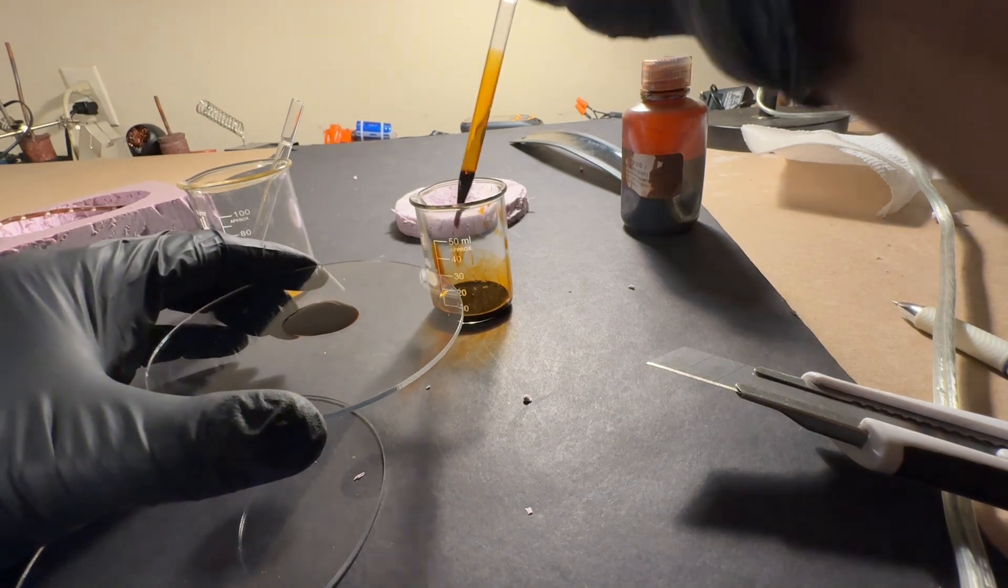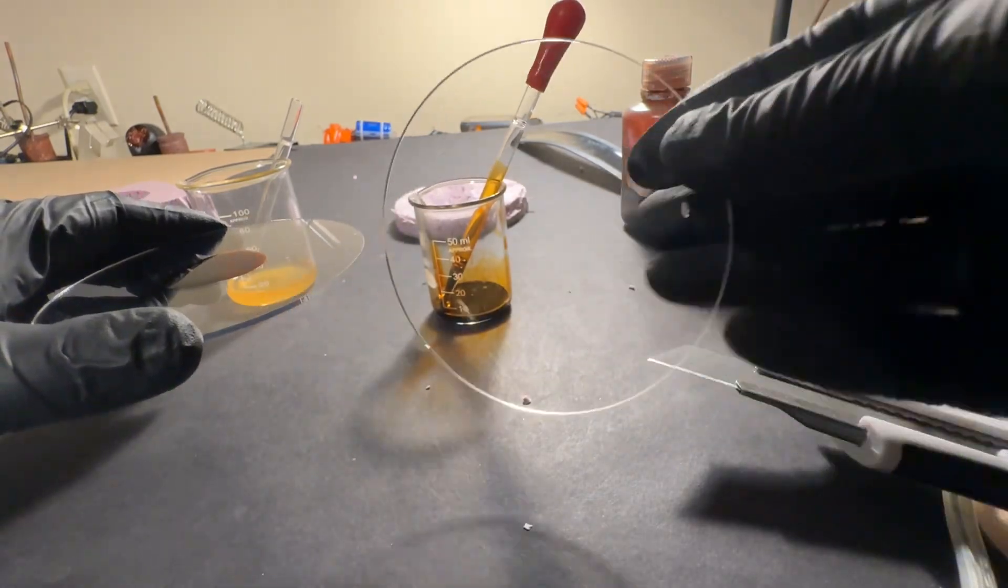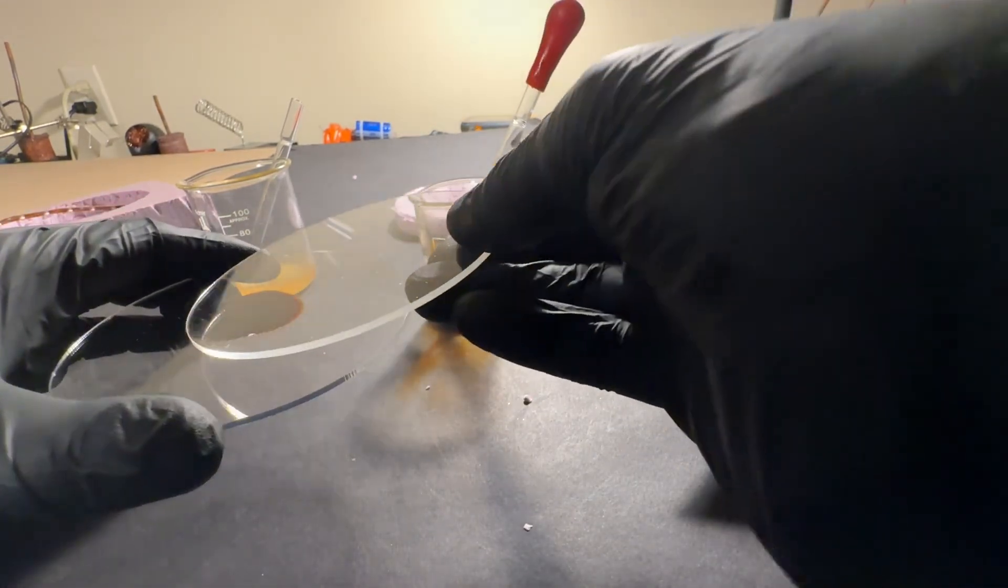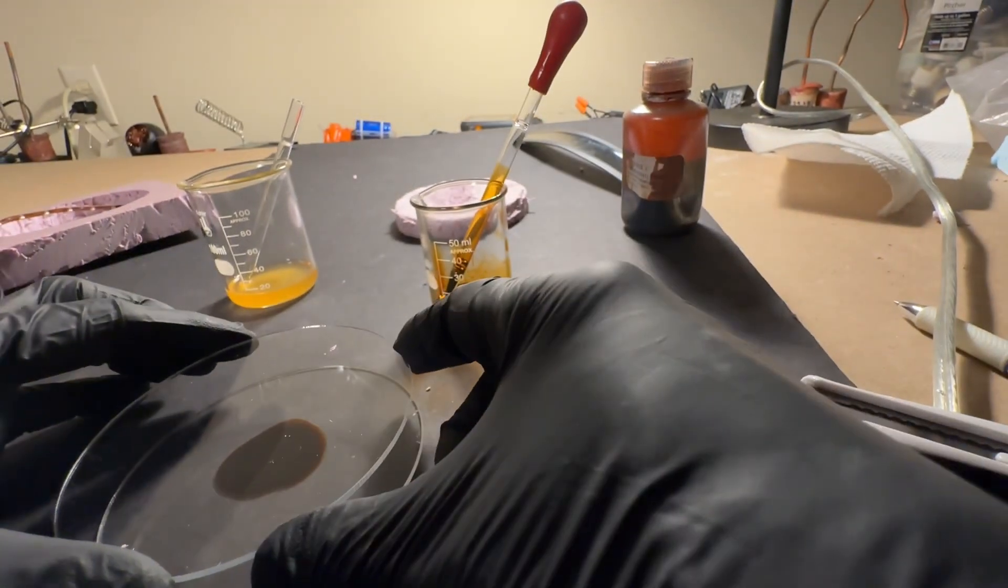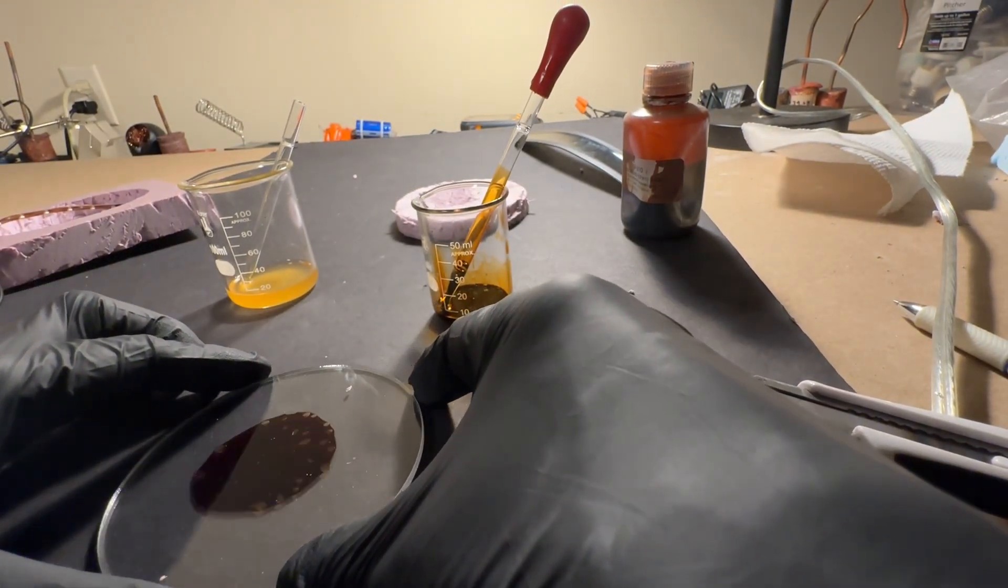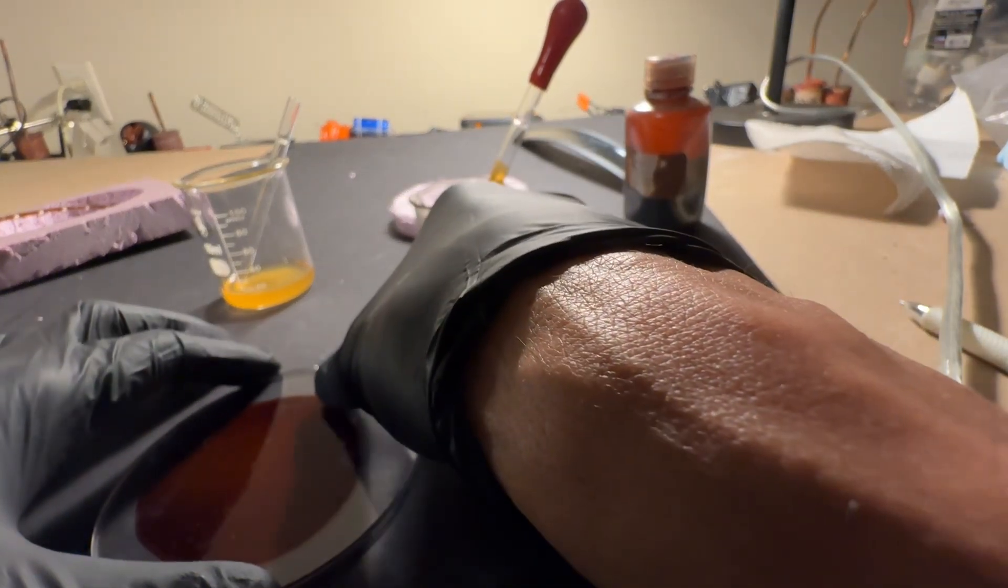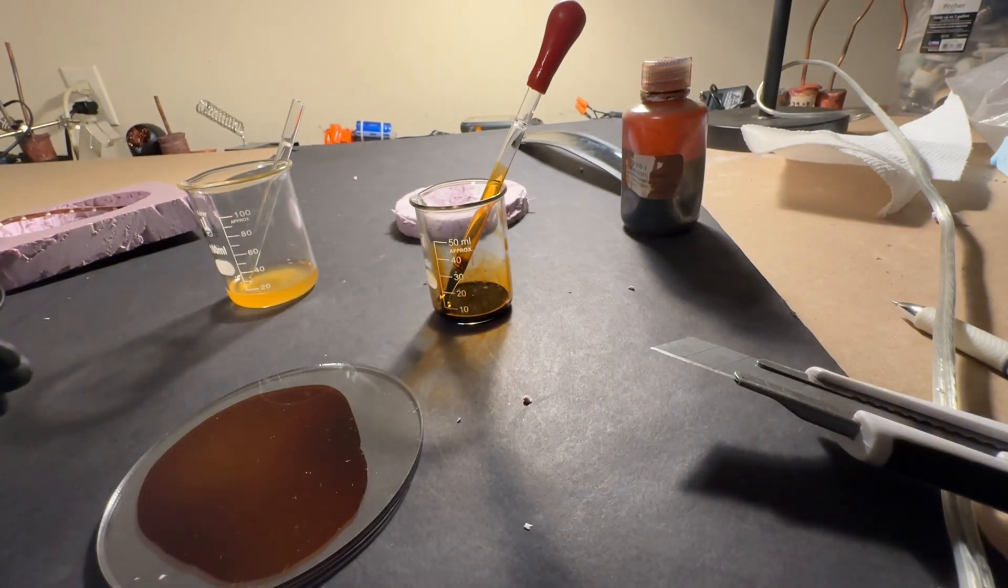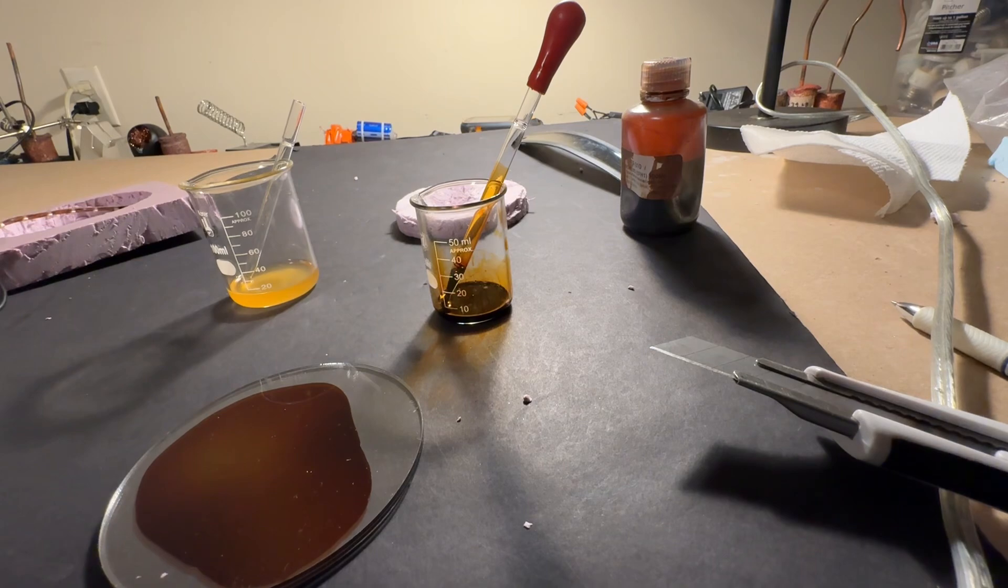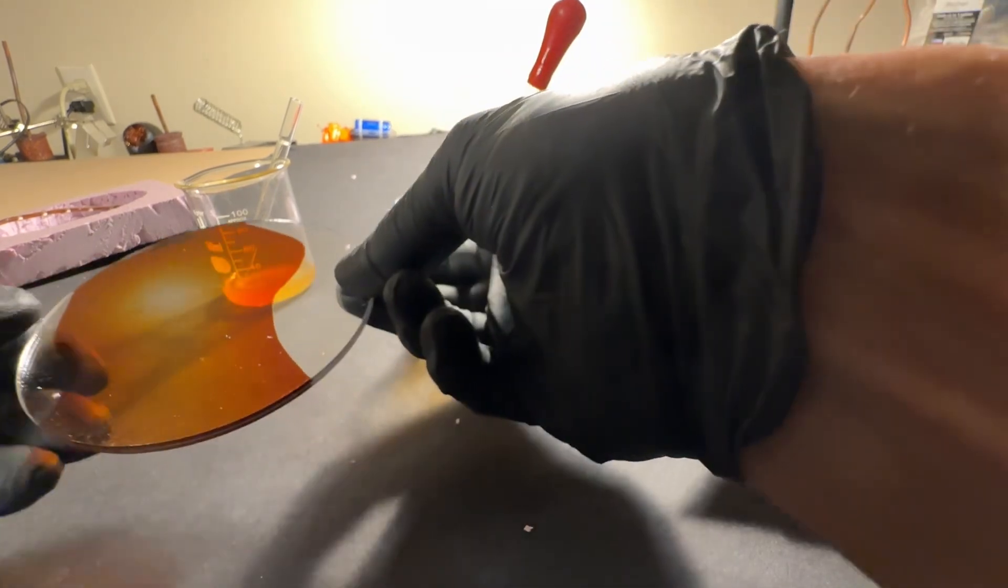Then you just lay the other disc on top of it and just lay it right on top. You want to make sure you get out all the bubbles, any bubbles in there you can squeeze those out. Get yourself some tissue paper to wipe off the edges. I'm going to pick this up and gently squeeze it to get any air bubbles out.